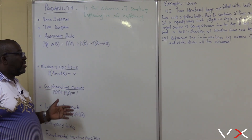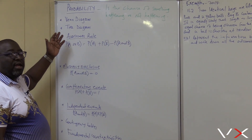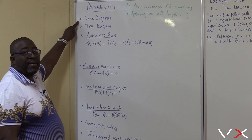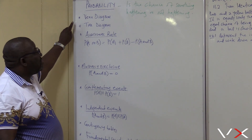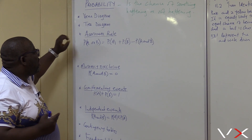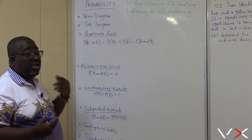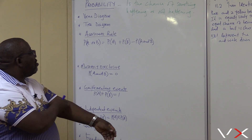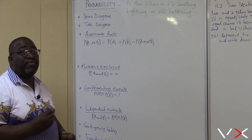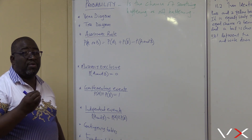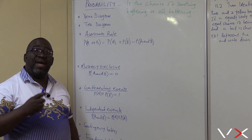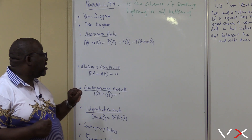To master this section, you've got to master the skeleton I've made for you. You've got to know your Venn diagram, your tree diagram, and the rule called the additional rule: Probability of A or B equals Probability of A plus Probability of B minus Probability of A and B, which is our intersection.